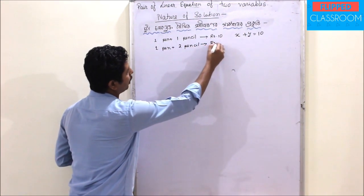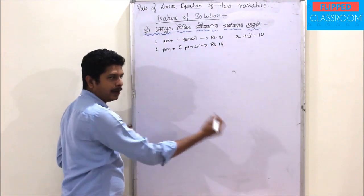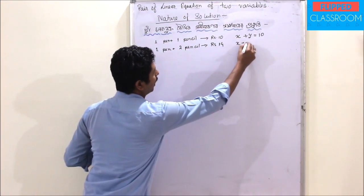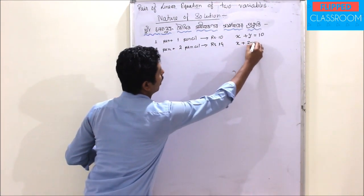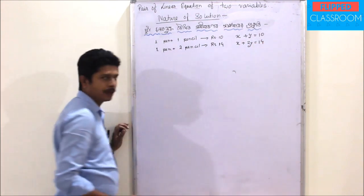The formula is 14. The equation is x plus 2y is equal to 14.